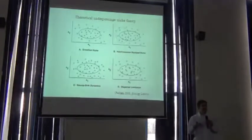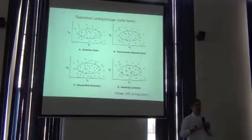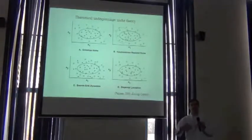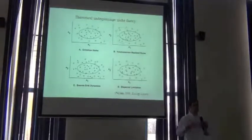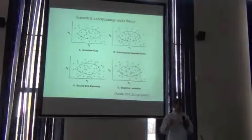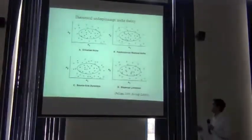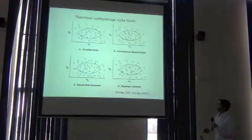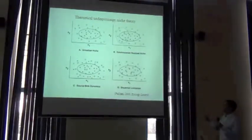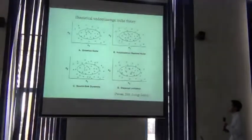The Grinnellian niche is simply the areas within ecological niche space that define where the species can occur — more specifically, where it can not just be observed once, but where it can maintain a population and maintain its full life cycle. We'll refer to that as the Grinnellian niche: the simple environmental conditions that define where the species can maintain a population.